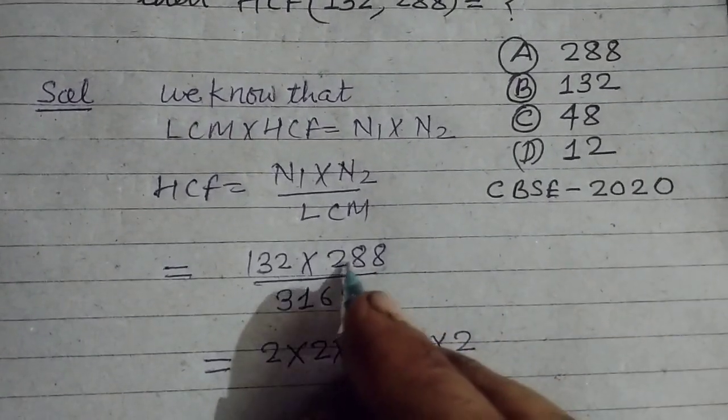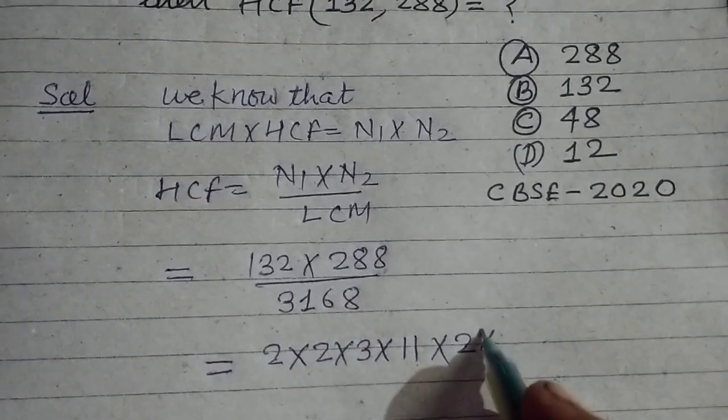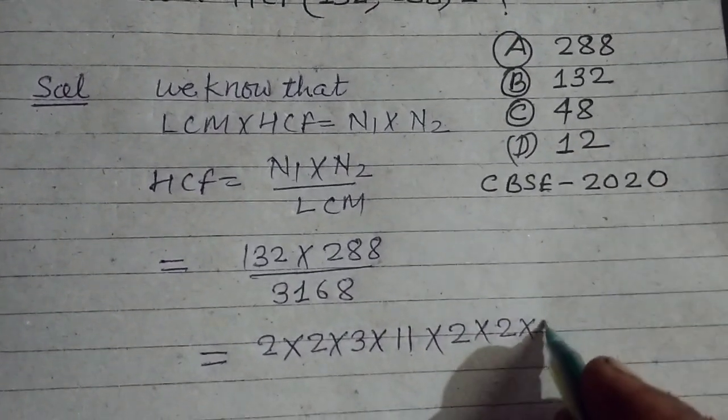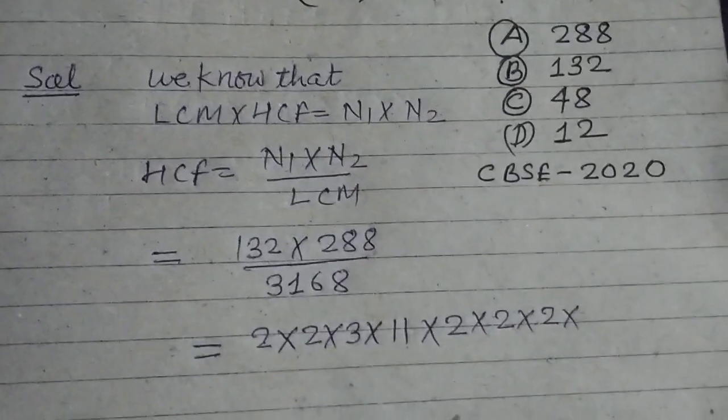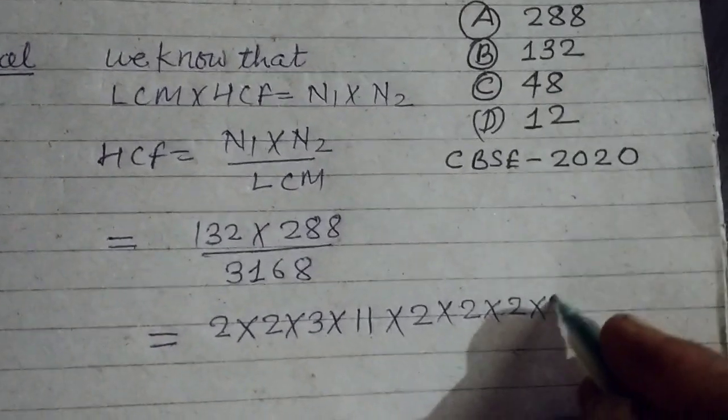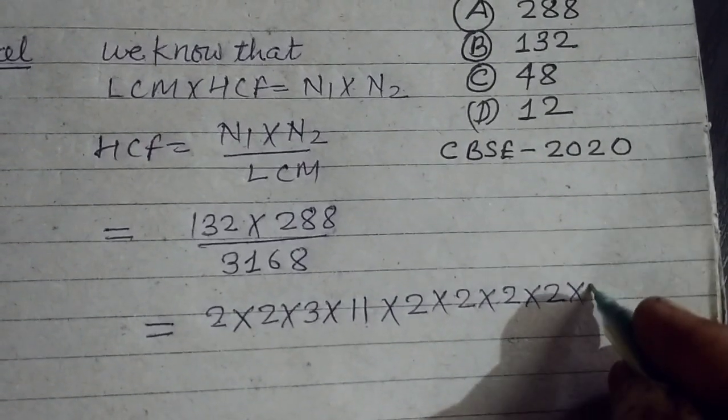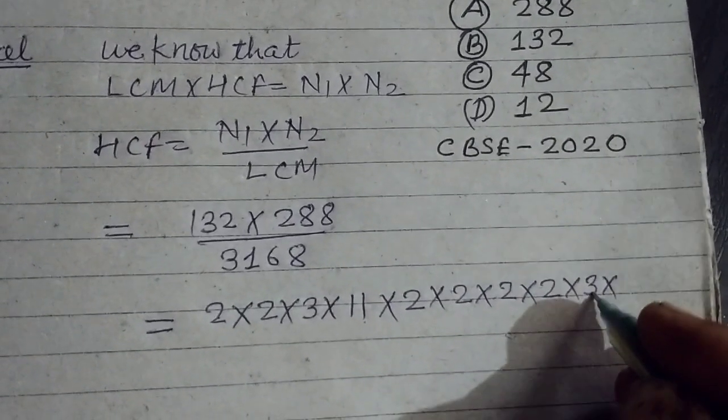When we factorize 288, dividing by 2 repeatedly: it becomes 144, then 72, then 36, then 18, and divided by 3 we continue the process.